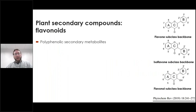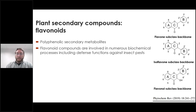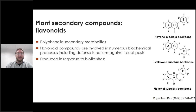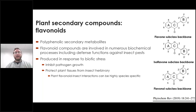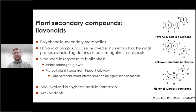I want to give a brief background on three players in this system. First, plant secondary compounds — flavonoids. They are polyphenolic secondary metabolites involved in numerous biochemical processes including plant defense, particularly against insect pests. They're produced in response to biotic stress, can inhibit pathogen growth, and protect plant tissues from insect herbivory. They can have highly specific flavonoid-insect interactions and are also involved in soybean nodule formation, and are known to be potent antioxidants, phytoestrogens, and powerful UV absorbers.